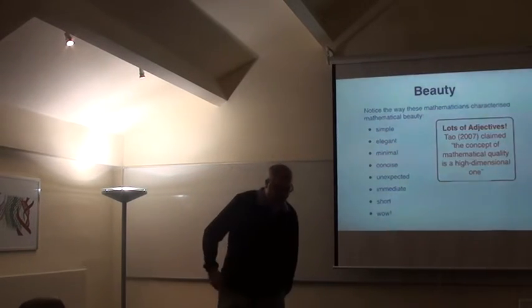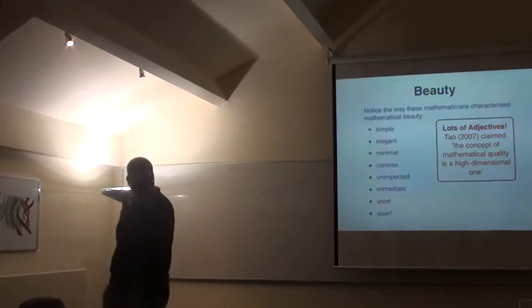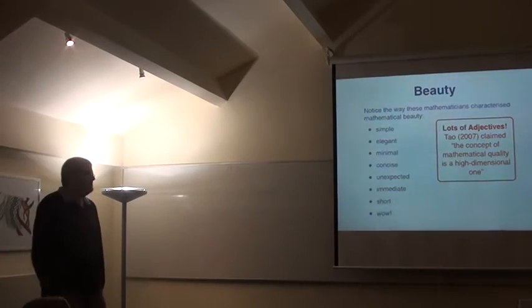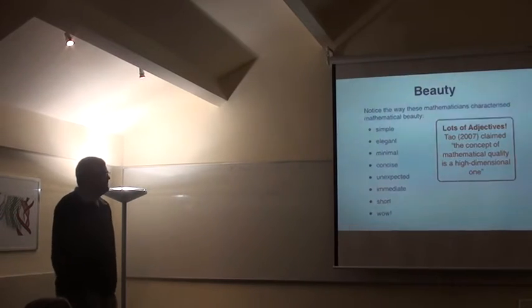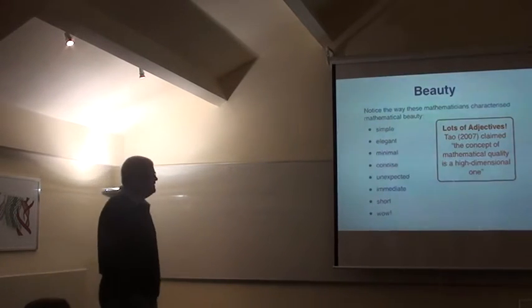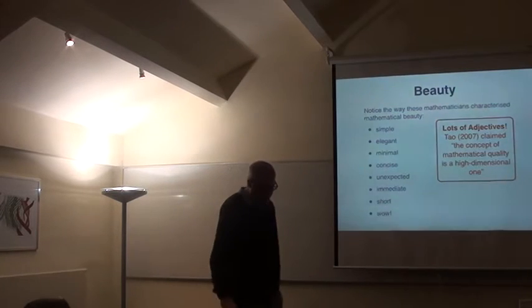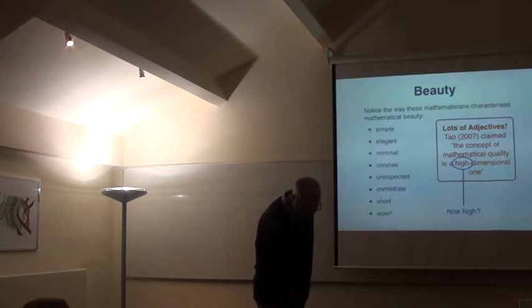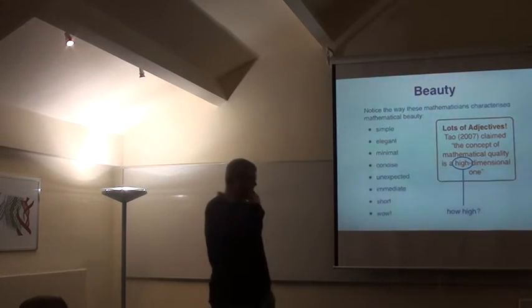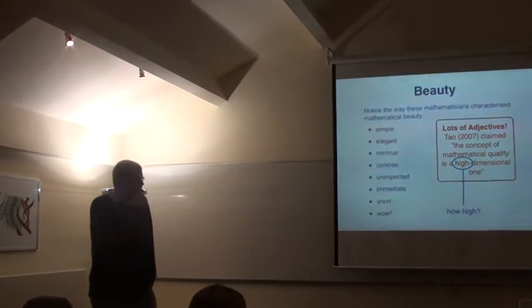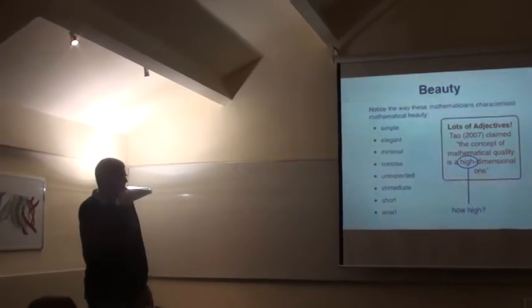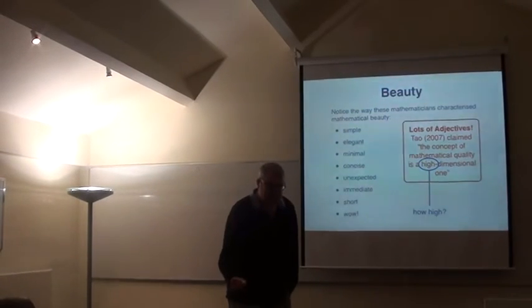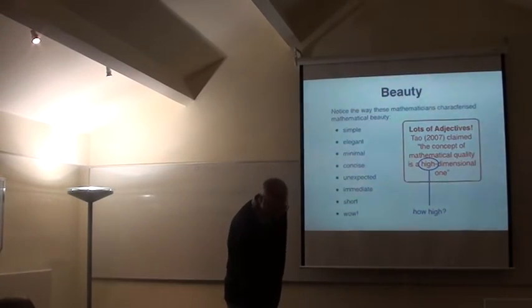So here's my argument about adjectives. If you look at the list of adjectives that mathematicians use when characterizing mathematical beauty, being on the list of words there. And again, a paper that David only mentioned, Terence Tao made this claim. He said that the concept of mathematical quality is a high dimensional one. So really, what I'd like to explore today, this is kind of a bit unsatisfactory, you know, it's high dimensions. We can do better than that. How many dimensions does it have? That's what I like to talk about. How many dimensions does mathematical quality have? That sounds like a crazy question to be asking like this, but my answer's four.